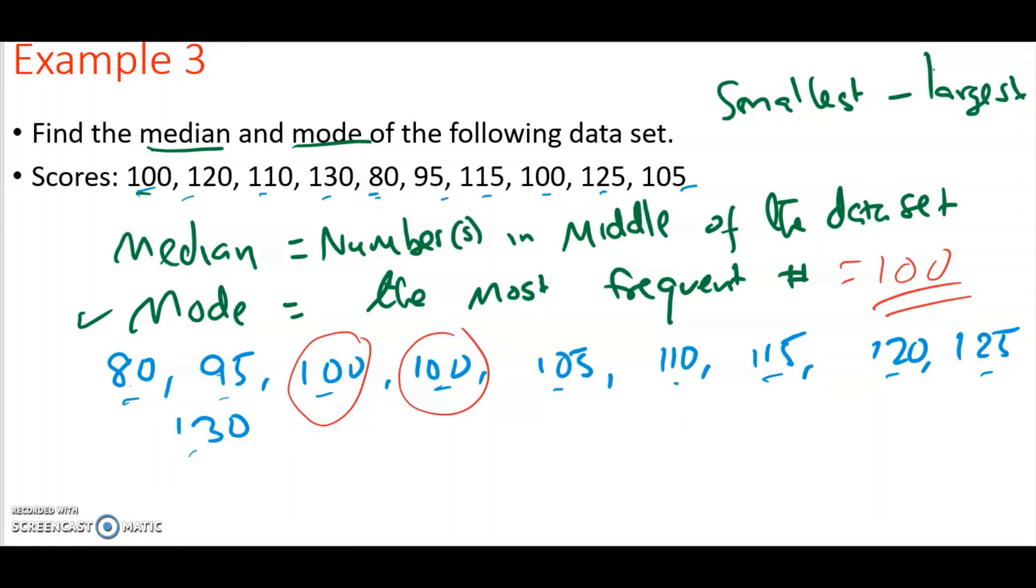And median is the number in the middle. Sometimes if the numbers are even, if the data set is even, then the median will be the sum of the two numbers in the middle divided by 2. In general, what that means is that you take the average of the two numbers in the middle. If it is an odd number, it is easy. There will only be one number that will fall in the middle. But when it is even, there will be two numbers that will be at the center, so you add those two and divide by 2.